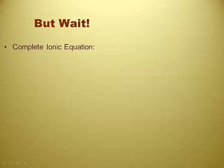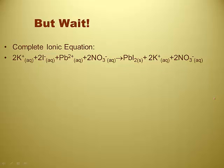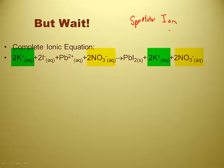Looking at the complete ionic equation again — do we have any spectators that aren't really doing anything? Yeah, two of them. There's something called a spectator ion: ions that are not involved in the reaction. The potassium ion appears on both sides and doesn't really do anything. Same thing with the nitrate ion on both sides — it didn't actually do anything. The only things that did anything were the lead ion and the iodide ion, which became lead iodide.